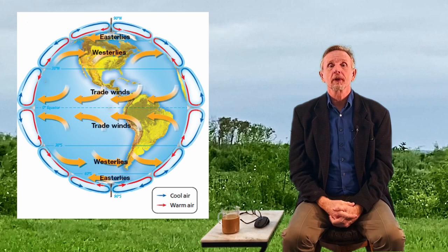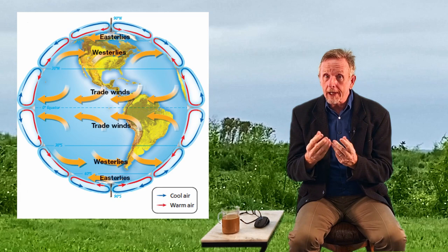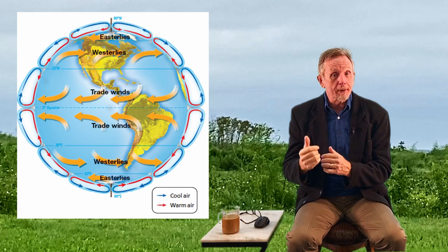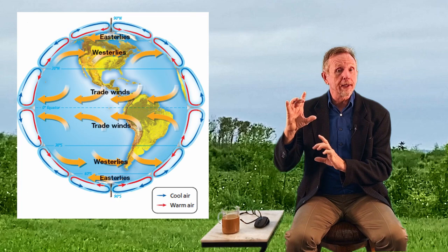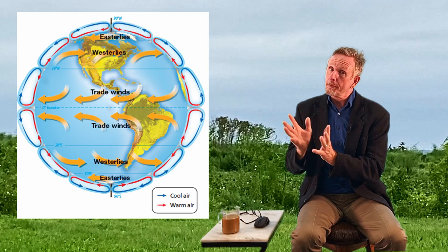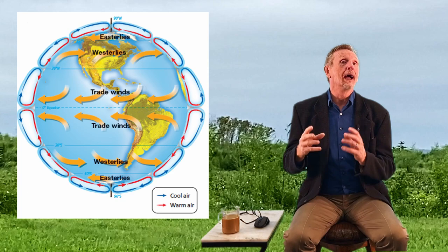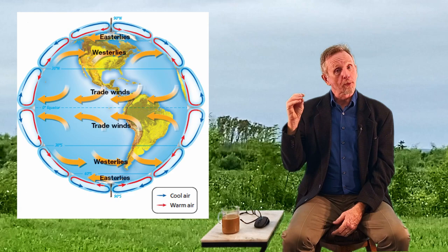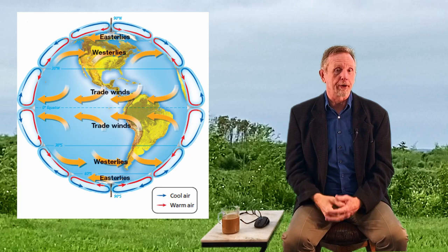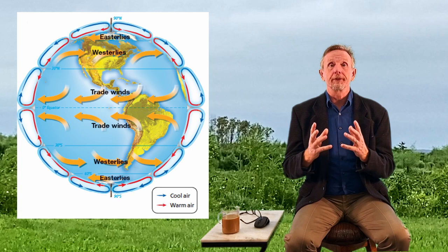Since the Earth is spinning, we get a Coriolis effect. The air tends to rise at the equator and fall around the 30th parallels. In the tropics we get trade winds — the wind blows from the east. In the temperate zones we get the westerlies — wind blows from the west. At the poles we get easterlies. We get these huge Hadley cells where the air rises at the equator, pushes off, falls at the 30th parallel, and rushes back in.